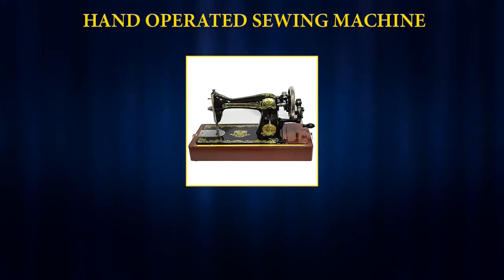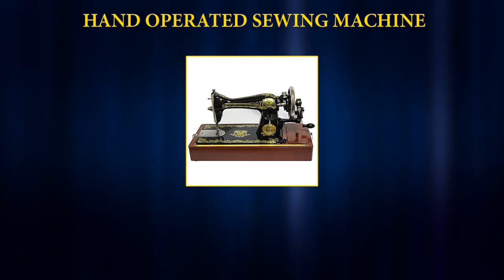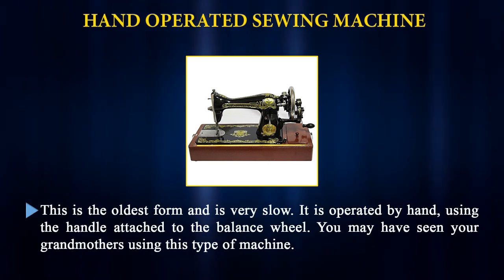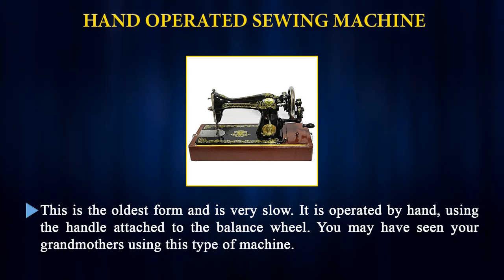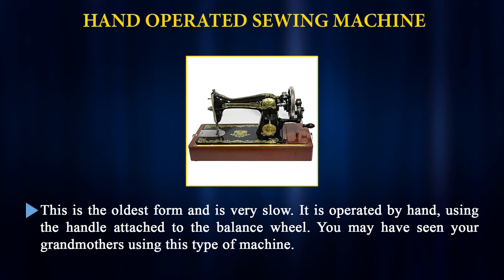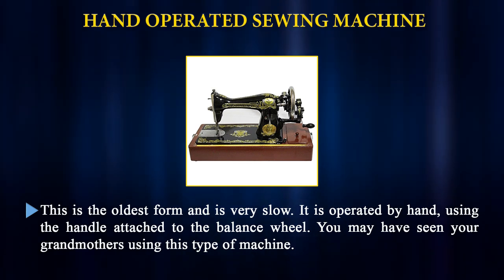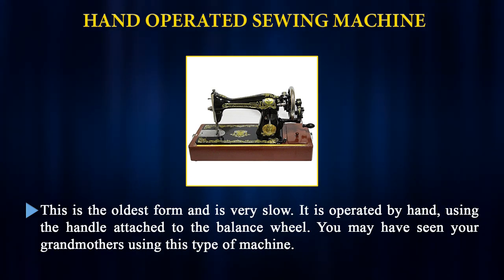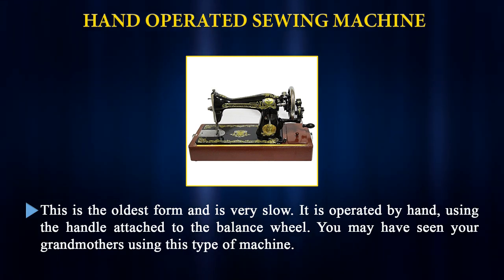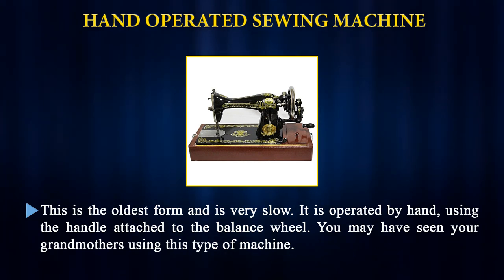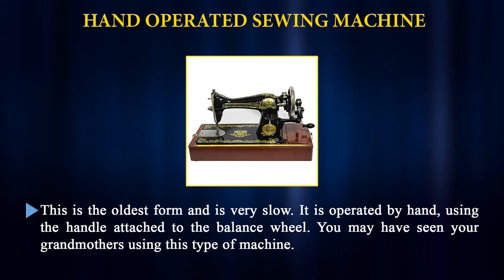The hand operated sewing machine is one of the oldest forms of sewing machine, and in the present context we can say it is a slow machine. It is operated by hand using a handle attached near the balance wheel, which is used to get the fabric stitched. You may have seen this type of machine used by your mother or grandmother. It is also referred to as the single needle lock stitch machine.